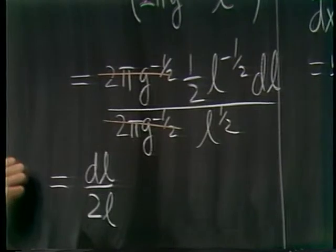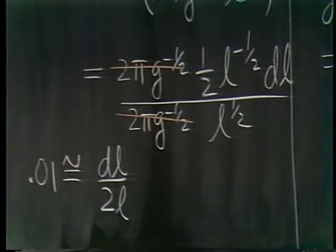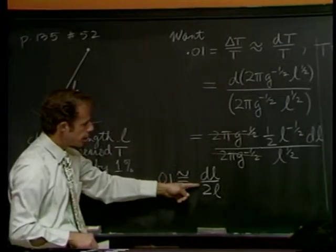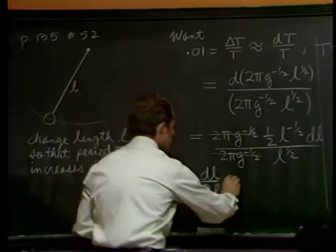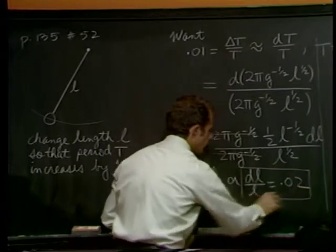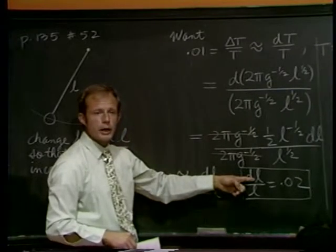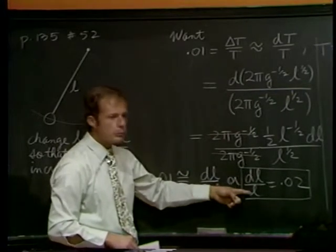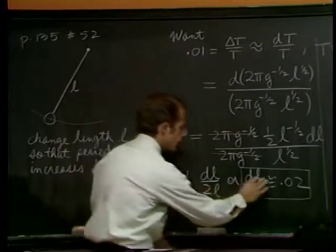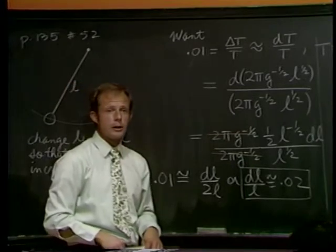There's t and dt. So on top we'll have 2 pi g to the minus 1 half. Easy problem now. 1 half L to the minus 1 half DL. That's the numerator. Denominator 2 pi g to the minus 1 half L to the 1 half. These constants go away. We can pull the L to the minus 1 half and the denominator is L to the 1. So we have DL over 2 L. Now let's recall what I wanted. I wanted, if you follow that line of equalities all the way up, and we need a double squiggle there really to make an approximation, we started out wanting 0.01 equaling what we just came up with, DL over 2L. So that means DL over L is 0.02. Actually, that goes the other way, doesn't it?